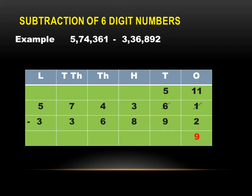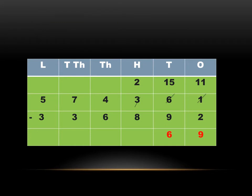Now move to the tens column: five minus nine. Again, five is smaller than nine, so it is not possible to subtract nine from five. So one will be borrowed from the hundreds place. At the tens place we will have fifteen, and at the hundreds place we have two. Fifteen minus nine gives six, so write six.